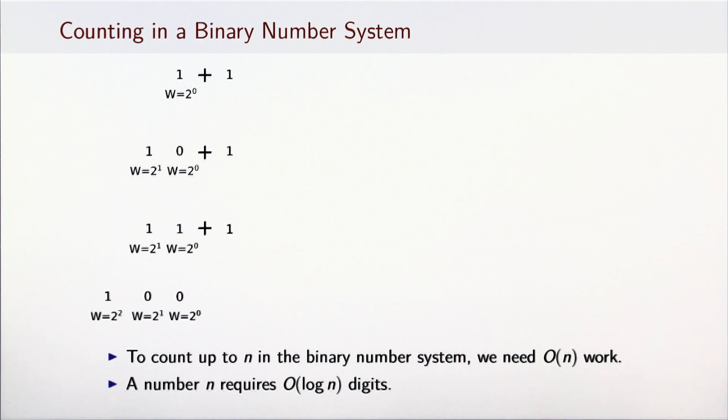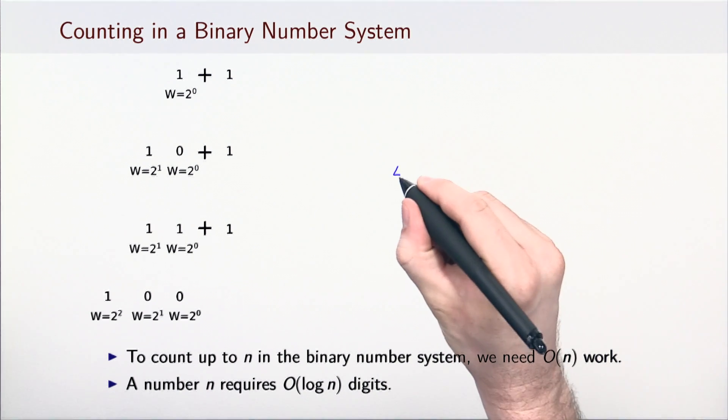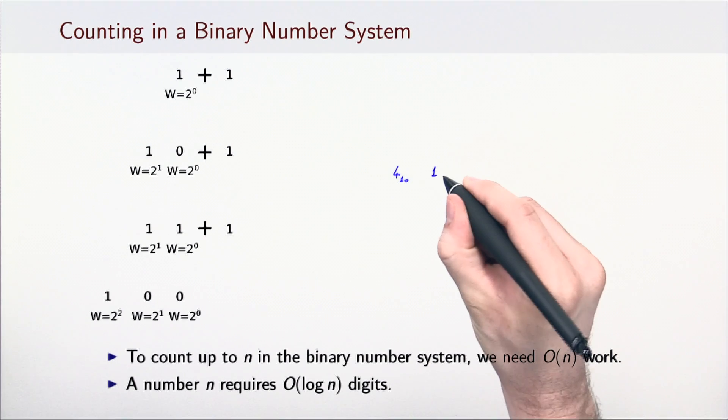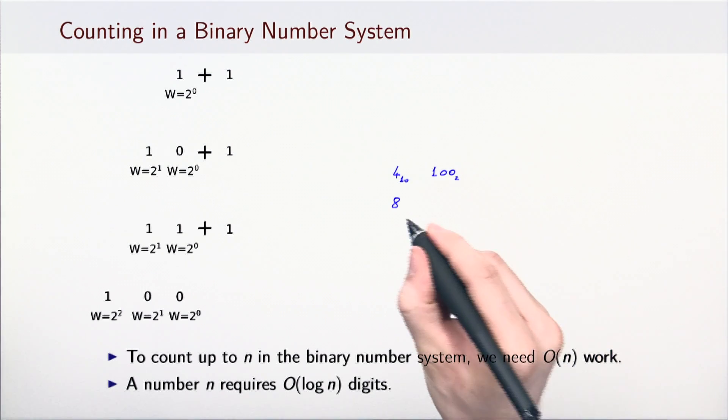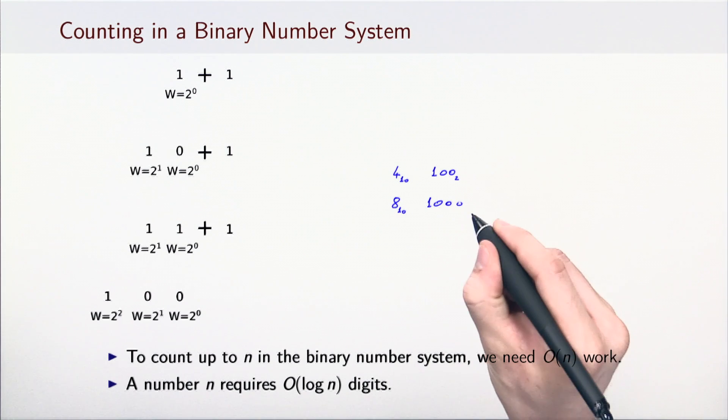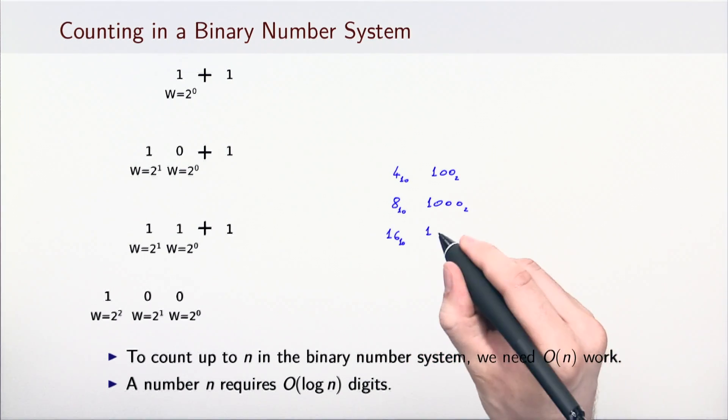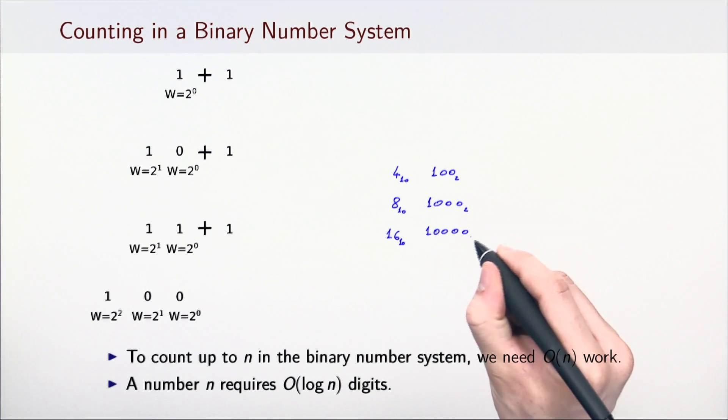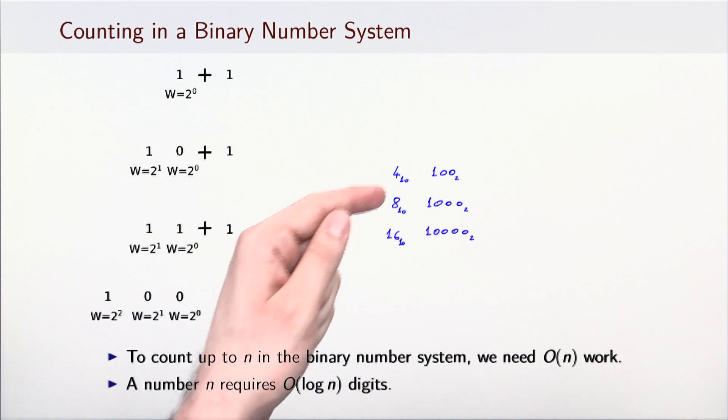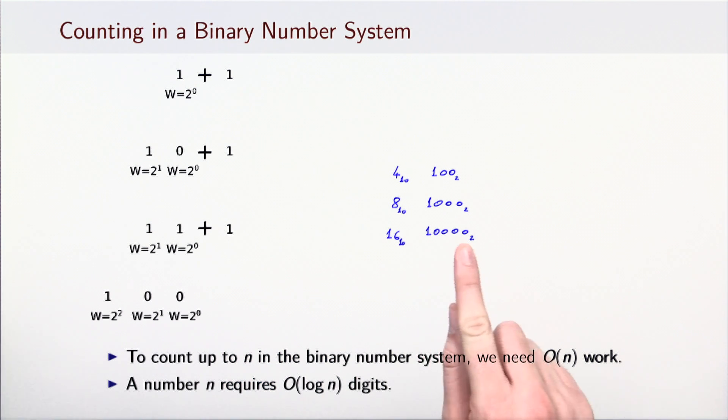Here is a sanity check. Number 4 is written as 100. Number 8 is twice as large but takes only an additional digit. Number 16 is again twice as large and again requires only one more digit. So, while the number grows exponentially, the number of digits grows linearly. This is the same as saying that the number grows linearly and the number of digits grows logarithmically.